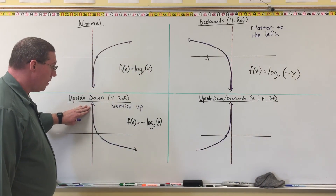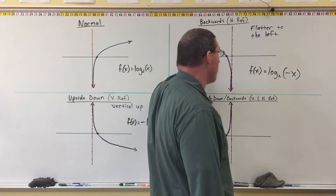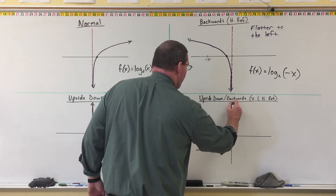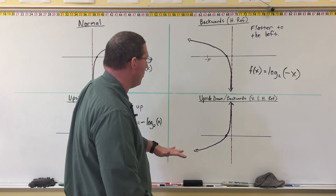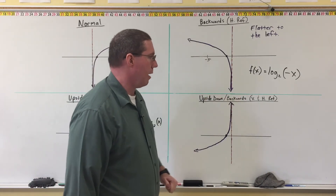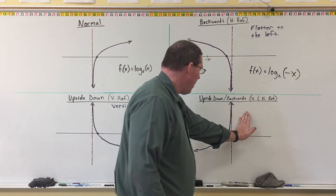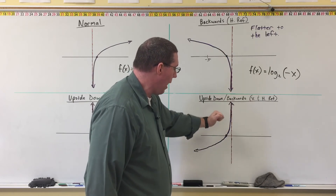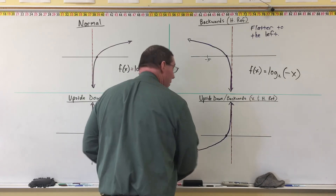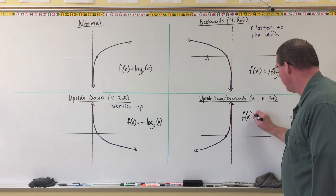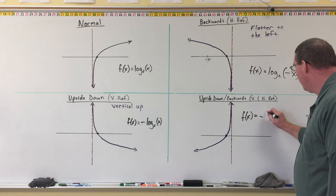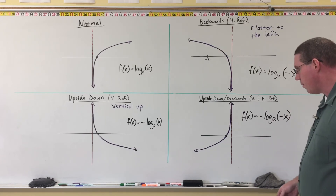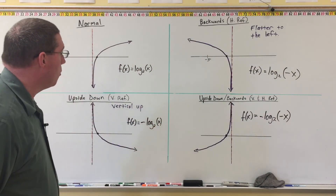So: upside down means vertical up, and you put a negative on the front. Flatter to the left instead of the right means it's backwards, so we put a negative on the x. And then we have this situation where it goes vertical up and flatter to the left at the same time — it has both qualities of upside down and backwards, and that's why this one is upside down and backwards. When you see a logarithm graph that is flatter to the left, on the left side of the asymptote, and pointing vertically up instead of vertically down, that means it is both upside down and backwards.